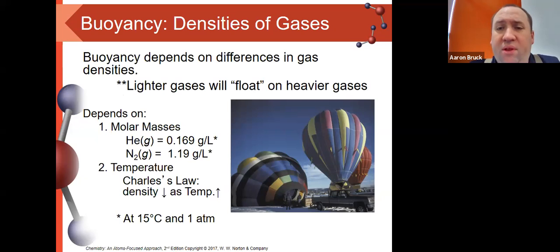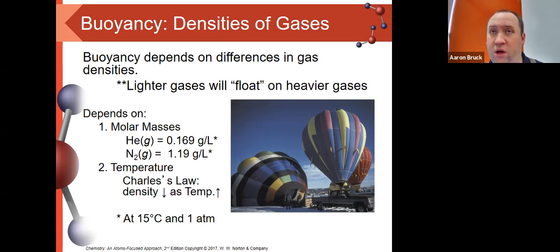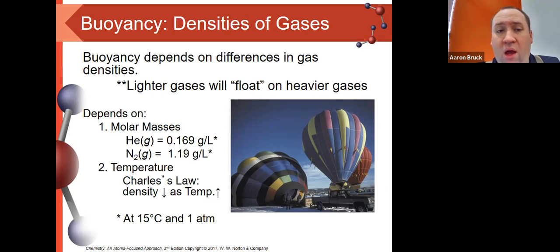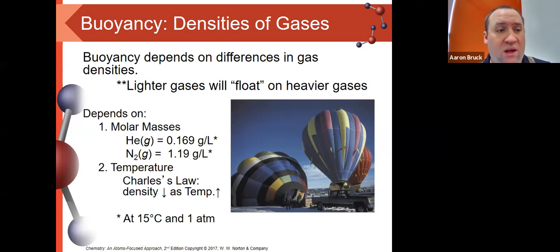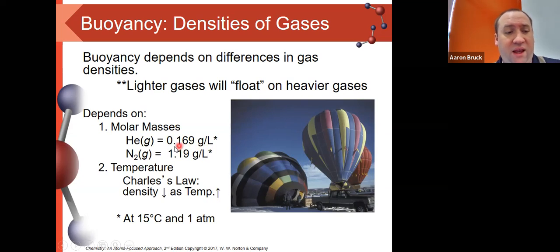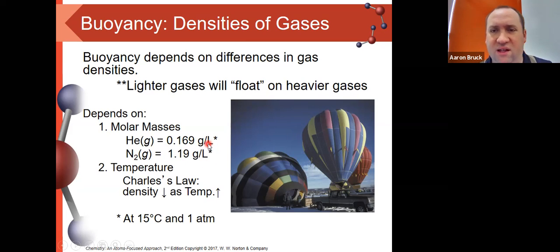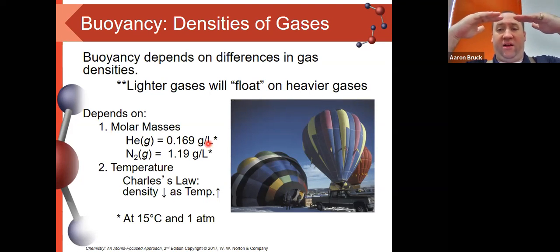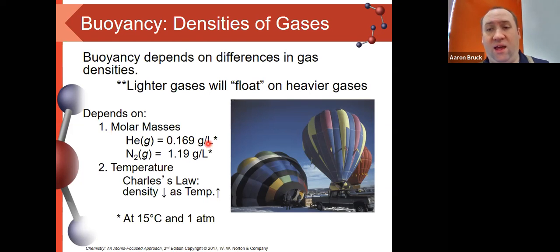One place where this really applies is gas buoyancy — how do hot air balloons work? Why does a helium balloon rise when a balloon filled with your breath falls to the ground? A lot of that has to do with gas density and the individual masses of those gases. The density of helium is 0.169 grams per liter, considerably less than nitrogen — which makes up about 80% of our air — at 1.19 g/L. That's roughly a nine-fold difference. Lower density rises, higher density falls — that's why we see the helium balloon go up.